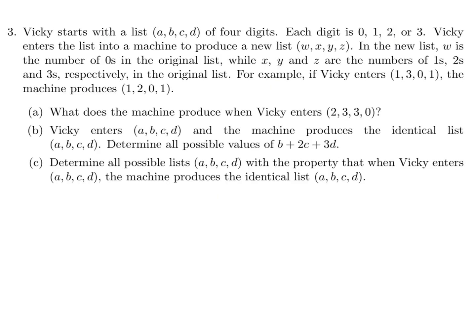So, Vicky starts with a list, A, B, C, D, of four digits. Each digit is 0, 1, 2, or 3. Vicky enters the list into a machine to produce a new list, W, X, Y, Z. In the new list, W is the number of 0s in the original list, while X, Y, and Z are the numbers of 1s, 2s, and 3s, respectively, in the original list. For example, if Vicky enters 1, 3, 0, 1, the machine produces 1, 2, 0, 1.